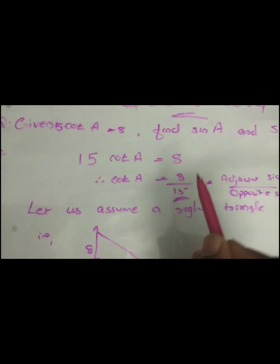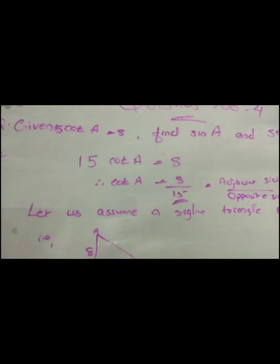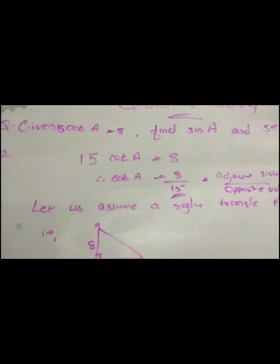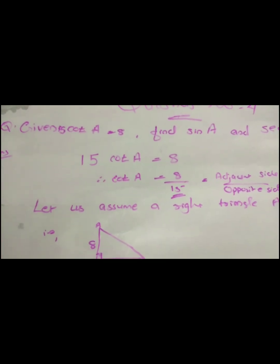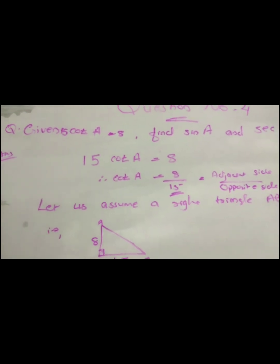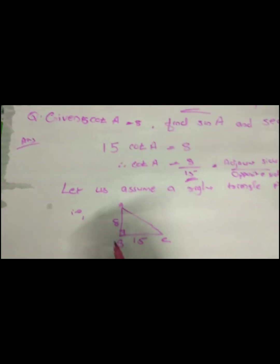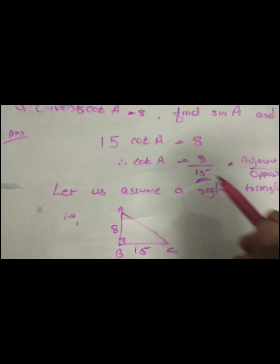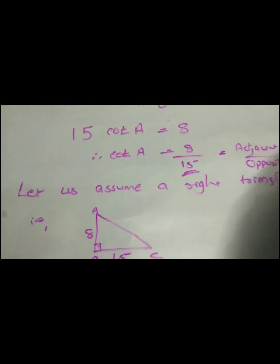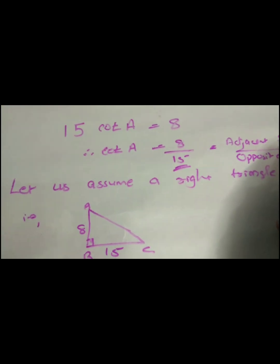Now we will assume this triangle. If we have any trigonometric questions, we will solve using a triangle. We assume the right triangle ABC with right angle at B. Now we check the cot value 8 by 15, that is for angle A: adjacent side by opposite side.